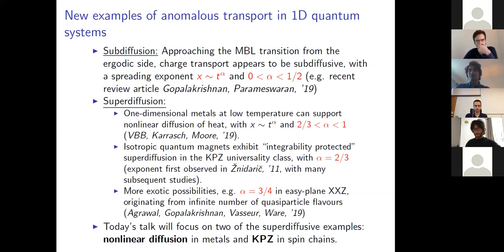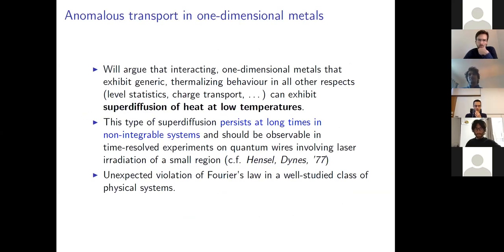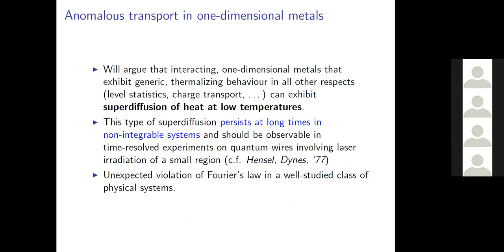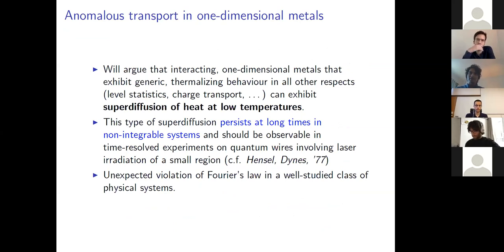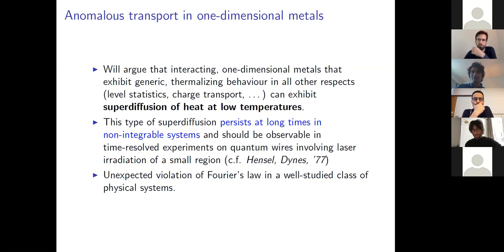In today's talk, I'm going to be focusing on two of the superdiffusive examples: namely non-linear diffusion in metals and the KPZ physics in spin chains. I'm going to argue that interacting one-dimensional metals that are thermalizing in all other respects, such as level statistics and charge transport, can exhibit superdiffusion of heat at low temperatures. Unlike some of the integrable examples, this type of superdiffusion persists at long times in non-integrable models and should be observable in realistic experiments on quantum wires — an unexpected violation of Fourier's law.